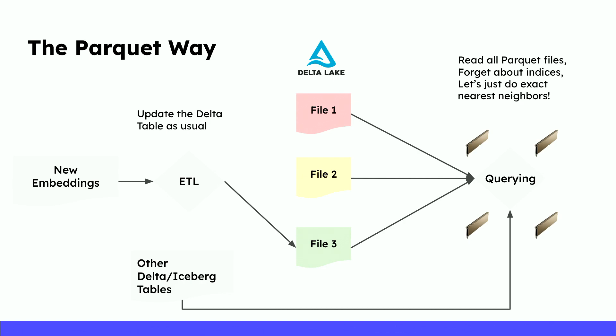Unfortunately, parquet files don't really support HNSW or inverted indices that make nearest neighbor search fast in vector databases today. So you'll have to use GPUs and do exact nearest neighbor search. But as people keep saying, GPUs are getting so fast these days that this might not even be a problem. What's really nice about this paradigm is that once your vector data is in the data lake this way, you can easily join it with other Delta tables — for example, joining against structured features of your products to further enhance your recommendation model.